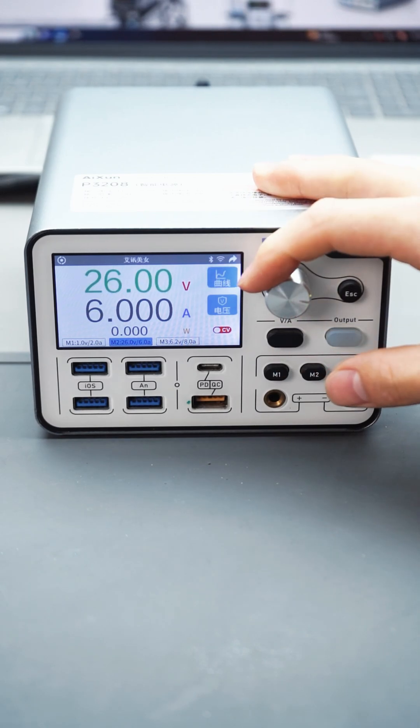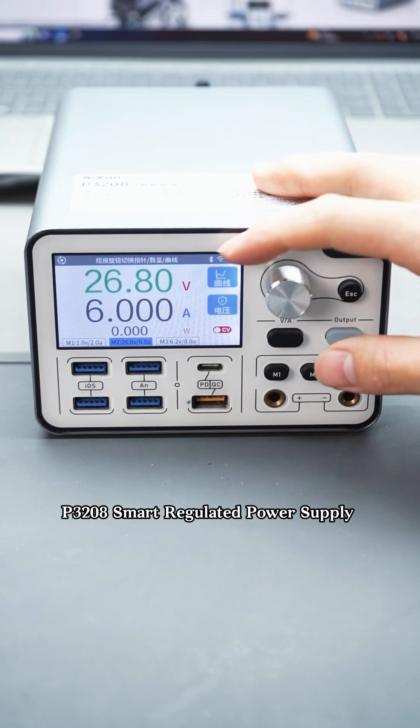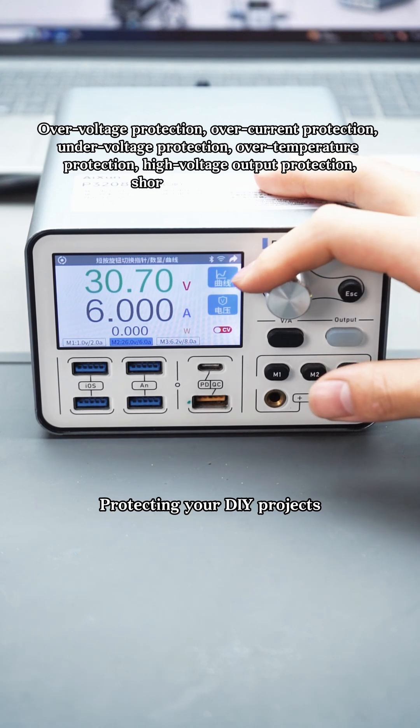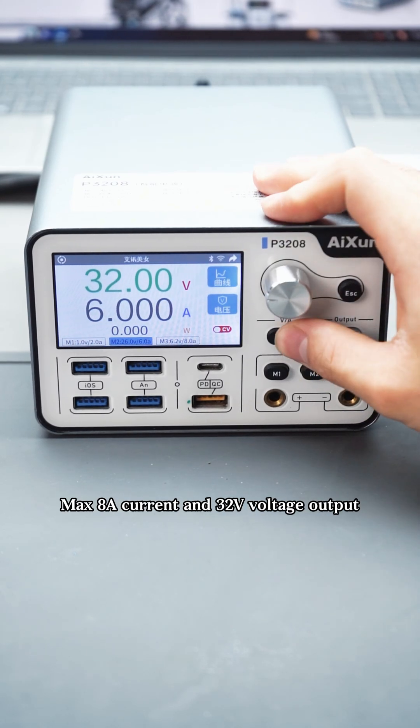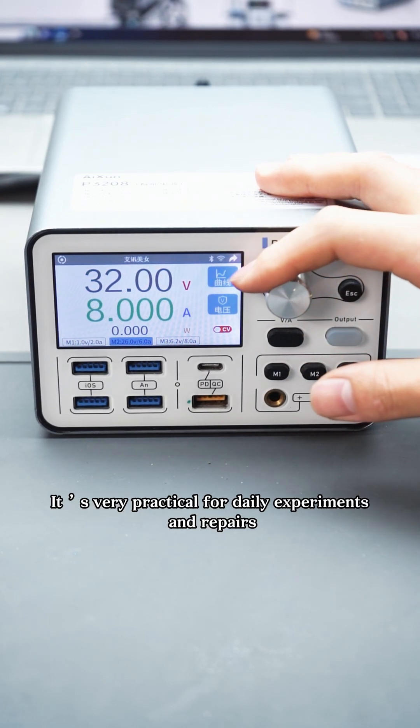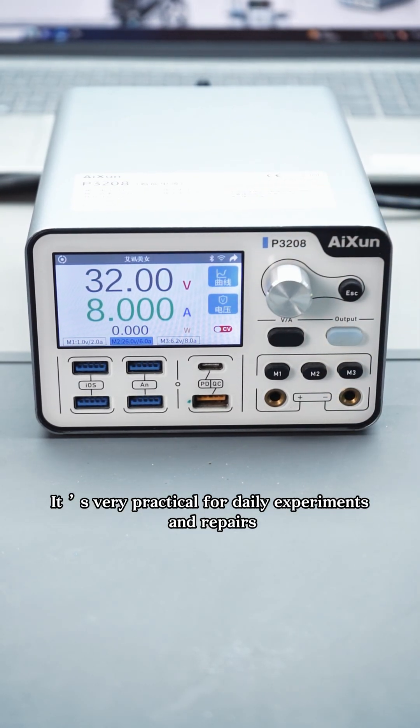Thanks to the helper for this experiment, the P3208 smart regulated power supply. Six major protection mechanisms protecting your DIY projects. Max 8A current and 32V voltage output. It's very practical for daily experiments and repairs. Come and try it out.